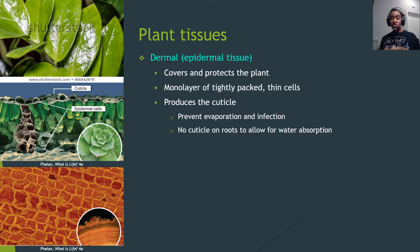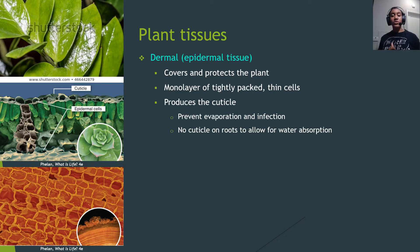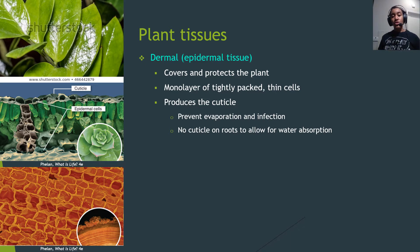Now we're going to dig deep into the structure of vascular plants. There are some variations, but the general information here applies to the vast majority of vascular plants. Plants have three tissue types: dermal, vascular, and ground tissue.